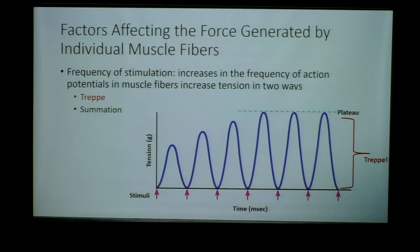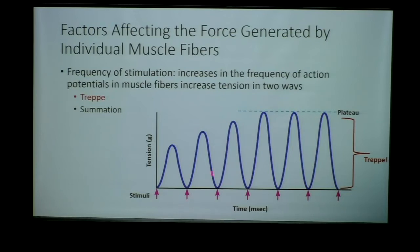After the initial contraction, the muscle will completely relax. In between each of these contractions, the muscle completely relaxes. What does completely relaxing mean with regard to calcium? All the calcium has to leave the cytoplasm. The idea behind TREP is that even though we stimulate this muscle a second time, for some unknown reason this muscle generates more and more force until it gets to its peak force production.